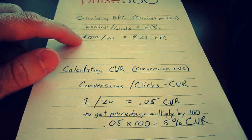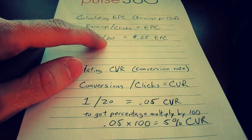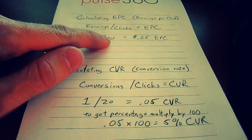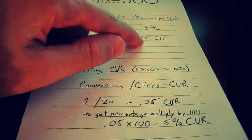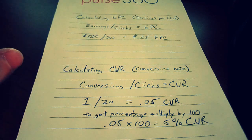Let's say you had one sign up at $5, it took you 20 clicks to get that — you take 5 divided by 20, equals .25 EPC, or 25 cents EPC.